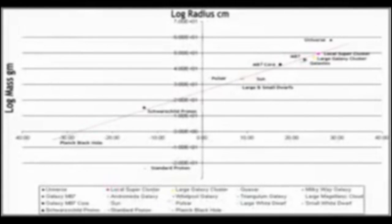Now it turns out if we plot every object in the known universe onto a logarithmic scale of mass versus radius, we find an approximate linear progression. Oddly enough, the Schwarzschild proton sits almost exactly on this line, while the standard model proton sits far outside, suggesting that the standard model is incorrect after all.